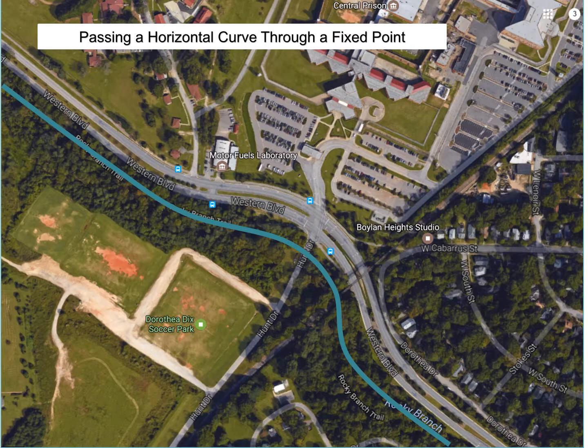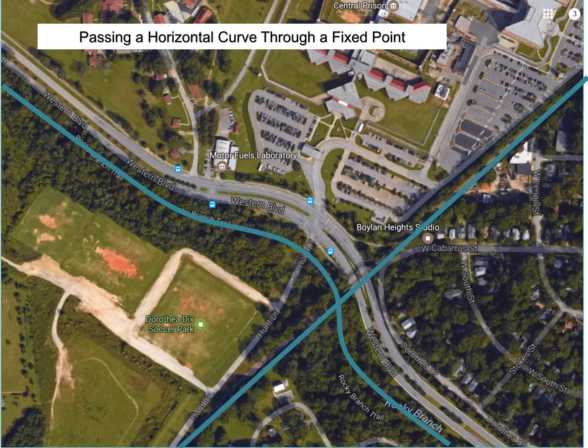The first is the Rocky Branch Creek here. Another one was the railroad that existed. One of the interesting elements is the relationship between the branch and the railroad caused a bridge to be built over the branch. So near the intersection of the Rocky Branch and the railroad, there was an existing bridge that could be fit under to provide the clearance for the roadway.